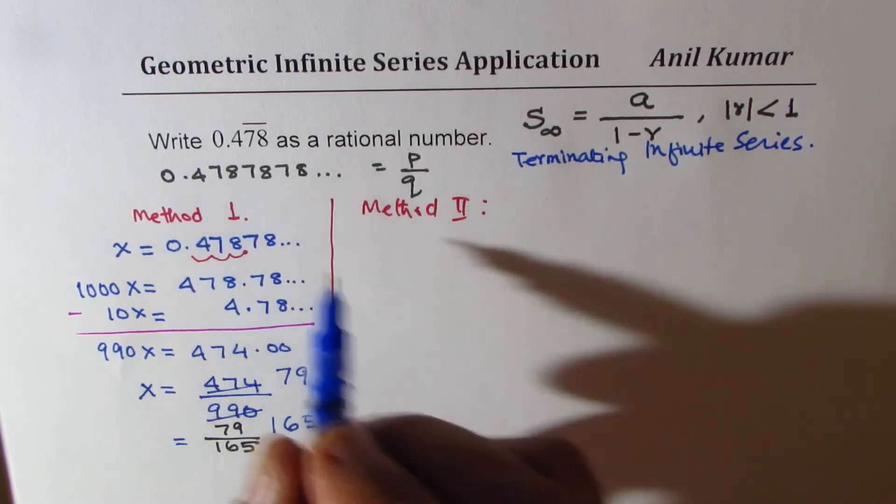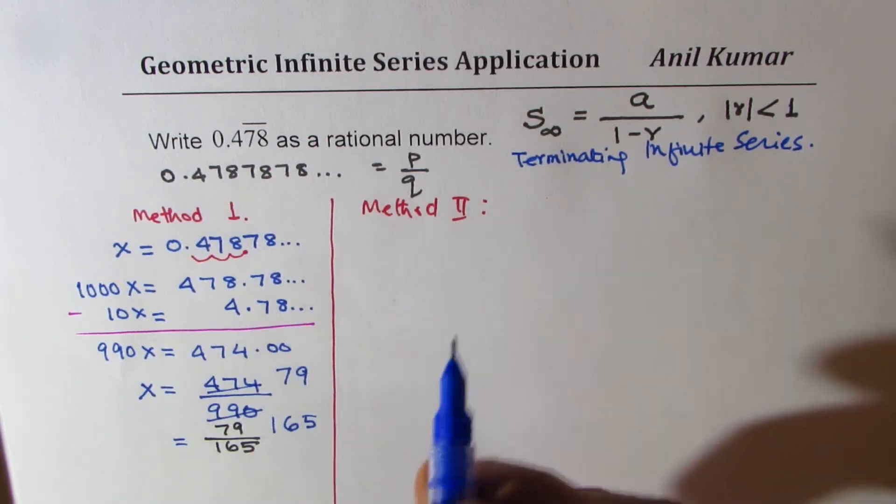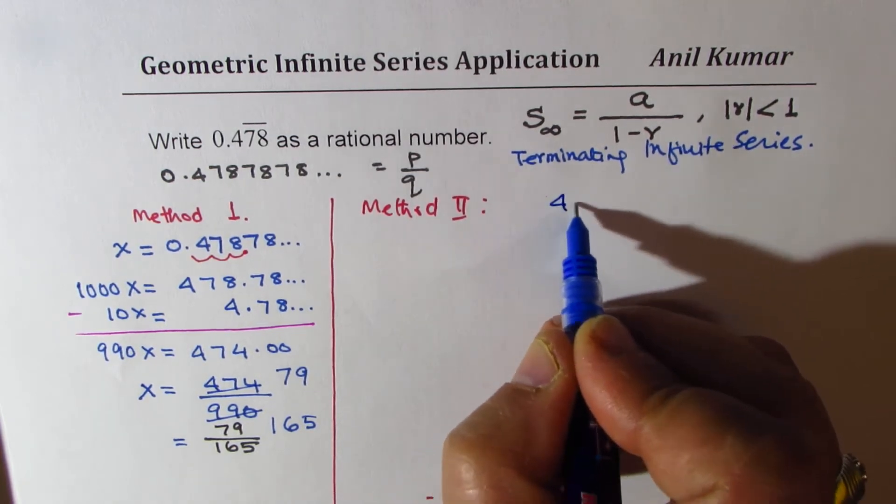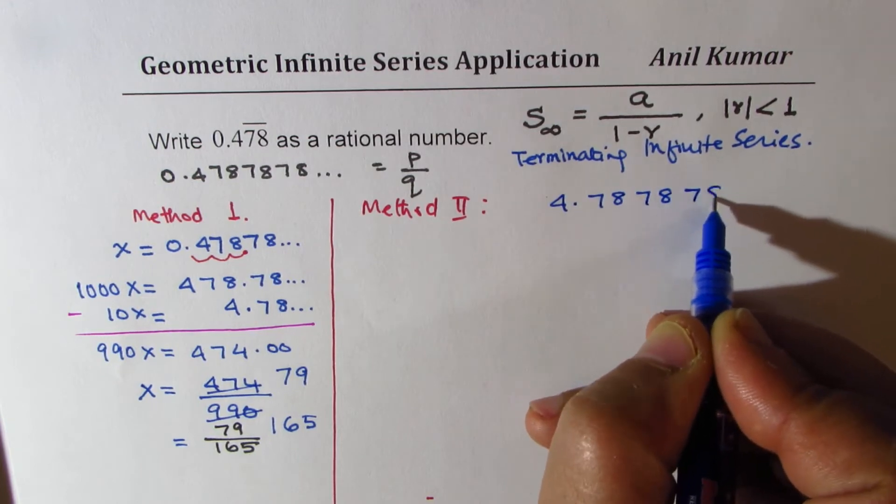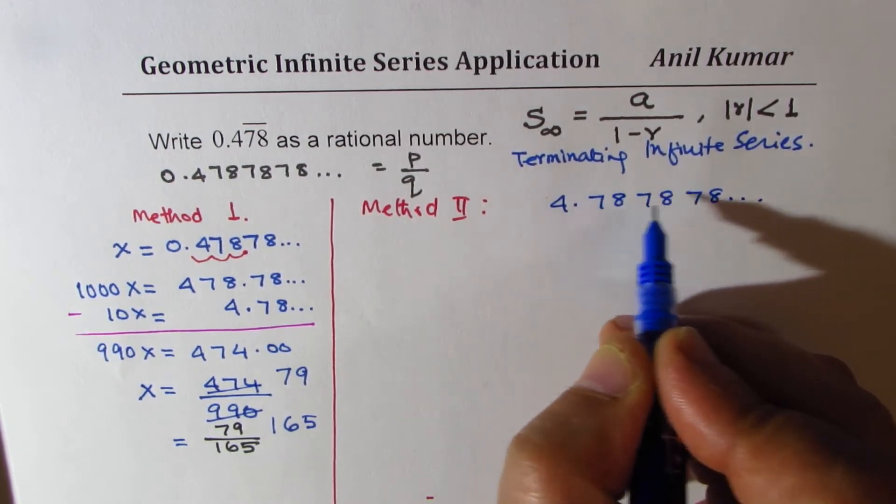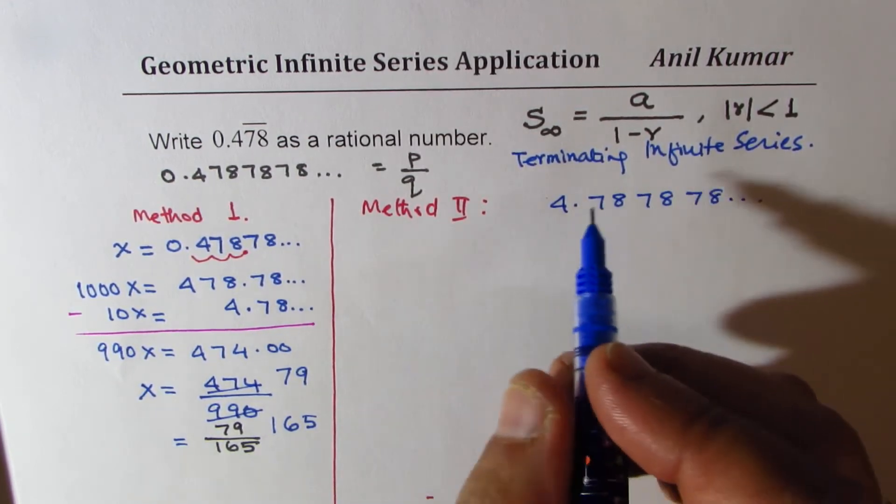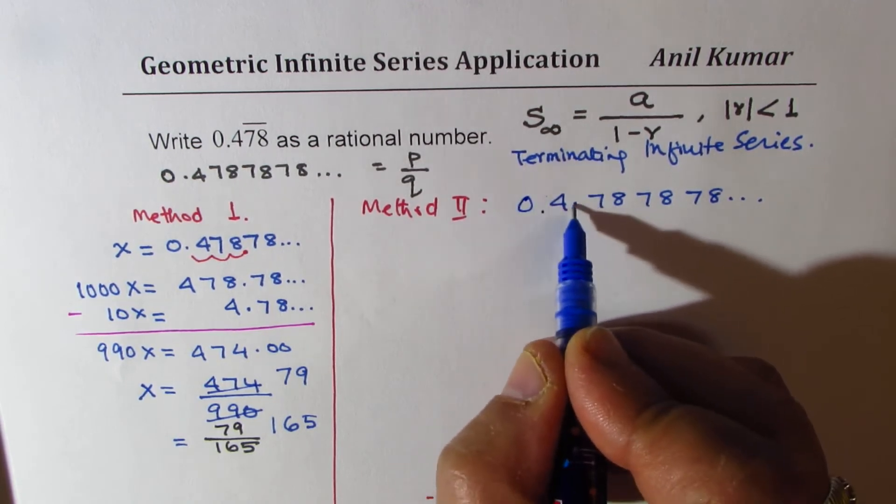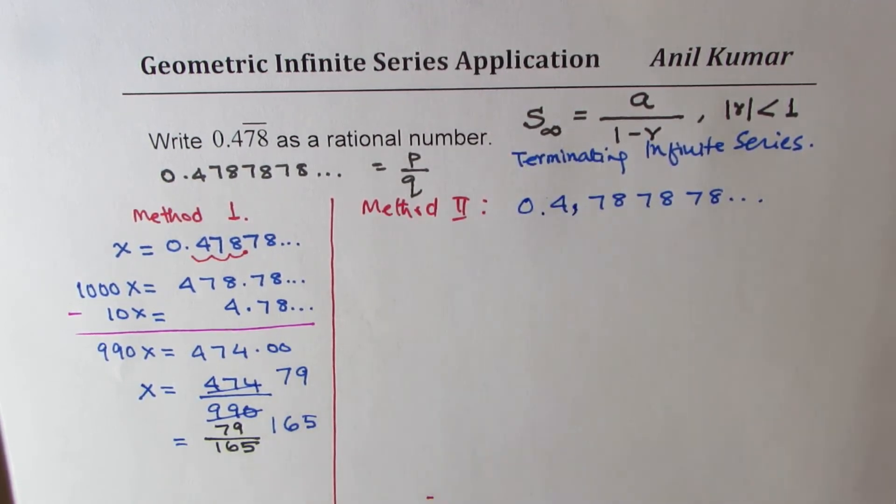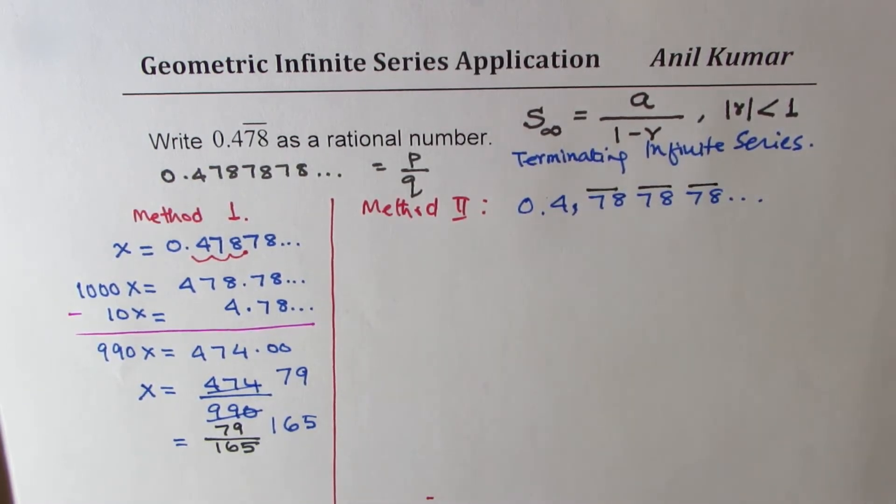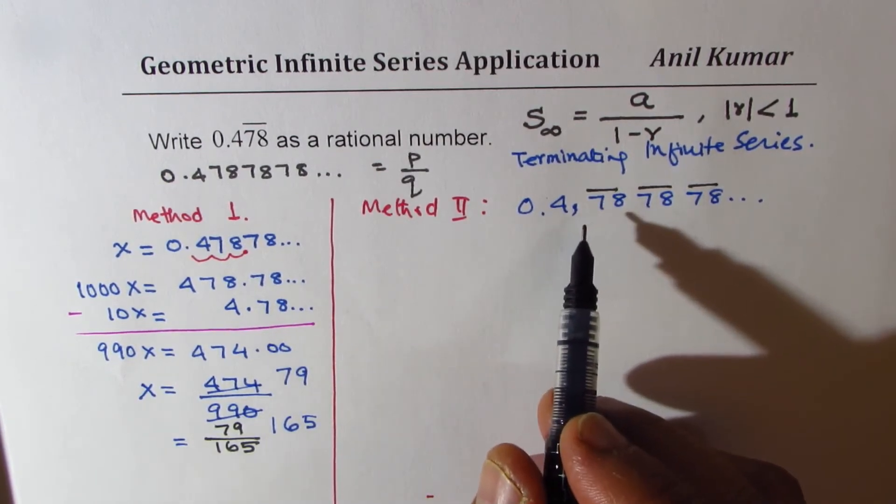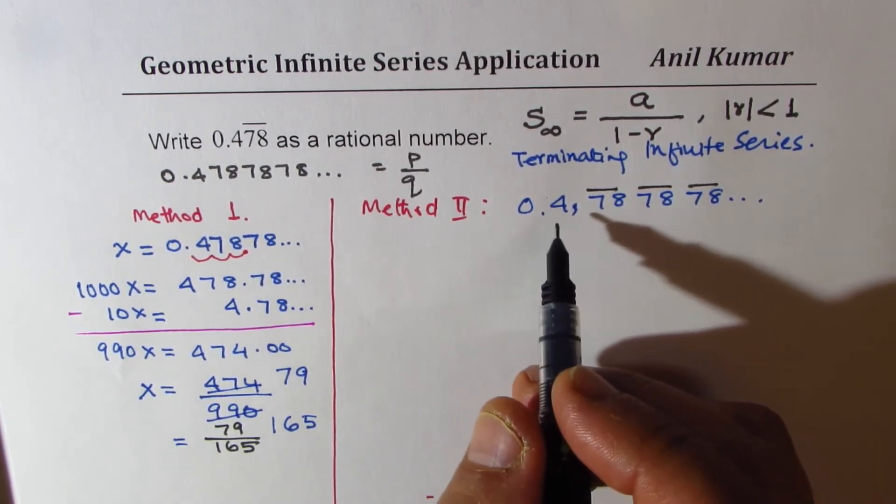We can say that the number here is, we are already given the number as 0.4787878, kind of like this. Do you see that? So this 7878 part is repeating. Now how do we write this number in a different form?